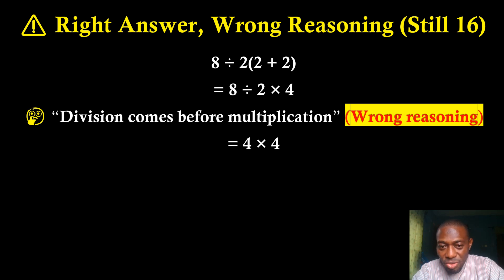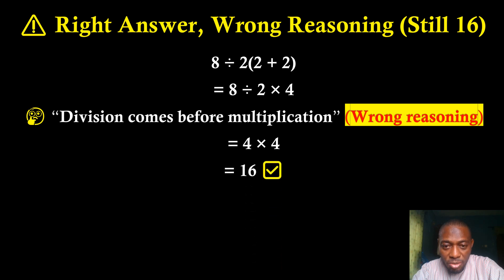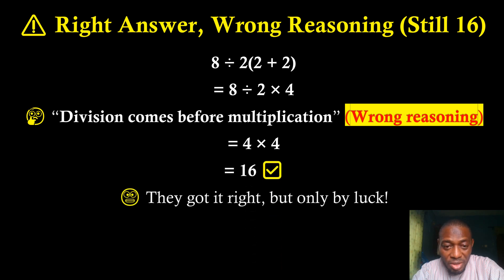If you do division first, 8 divided by 2 gives us 4. Then multiplication comes next: 4 times 4 gives us 16, and that is the correct answer — but it is gotten by luck, not correct reasoning.